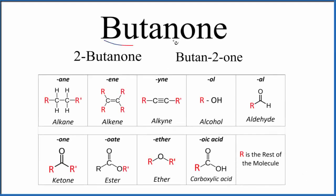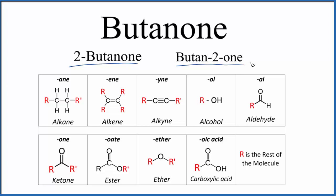Let's write the structure for butanone. For butanone, there are two other names. You'll sometimes see it written as 2-butanone, and then there's butan-2-one, which is actually the preferred IUPAC name. But quite often, you just hear it called butanone, and we'll talk about why that is in just a moment.